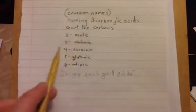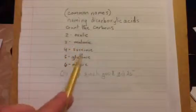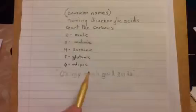O, M, S, G, A. Two carbons oxalic, three carbons malonic, four is succinic, five is glutonic, and six is adipic. So you'll definitely want to memorize all of these because you will be using them a lot when naming carboxylic acids and their derivatives.